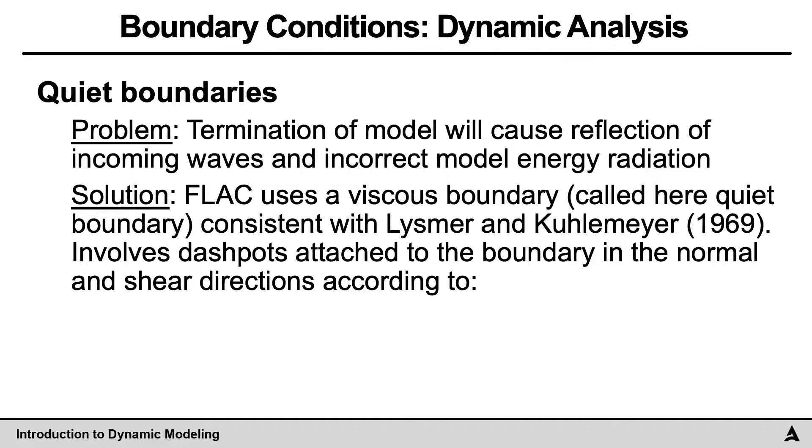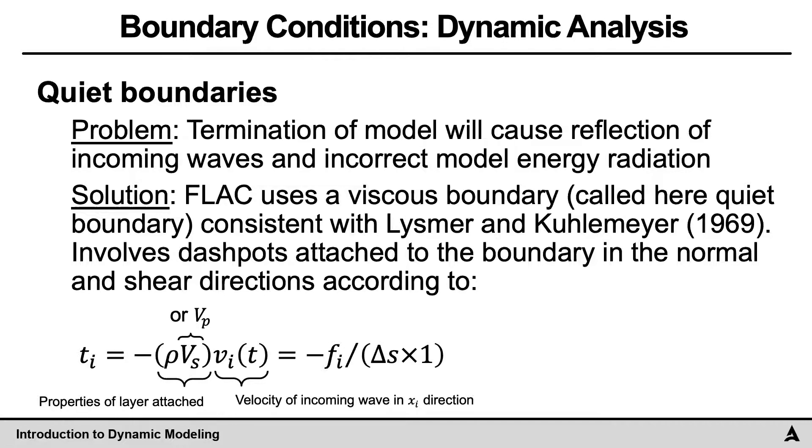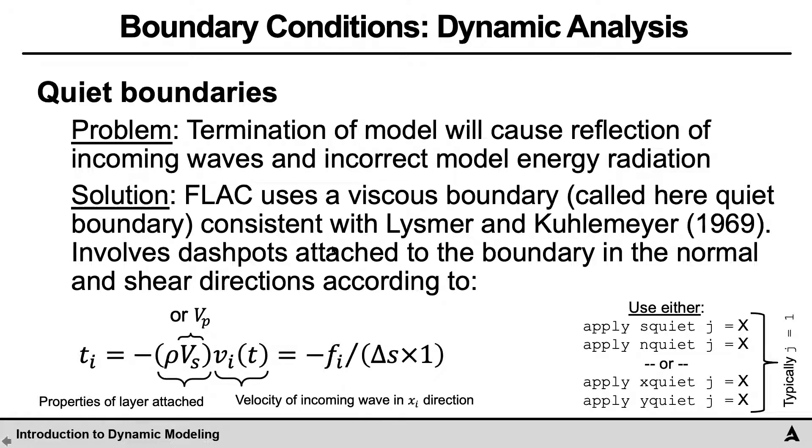So what does FLAC do? FLAC uses viscous boundaries, called here quiet boundaries, that are consistent with Leismer and Kuhlermeyer. The way that this is done numerically is with dashpots that are attached to the boundary in the normal and shear directions according to the following equation. The key thing is there's a force traction added, and the quiet boundary response is a function of the properties of the attached layer - the density and either the shear wave velocity or the P wave velocity, and also the velocity of the incoming wave.